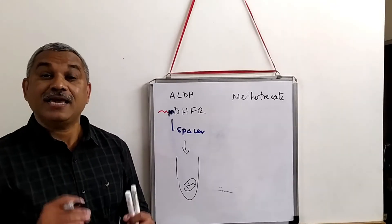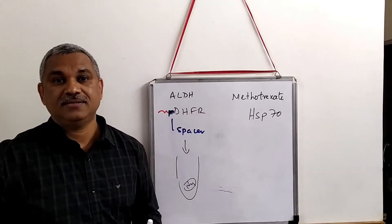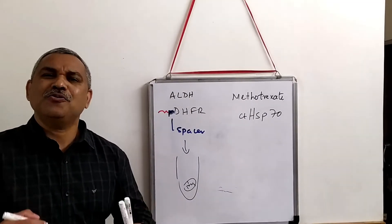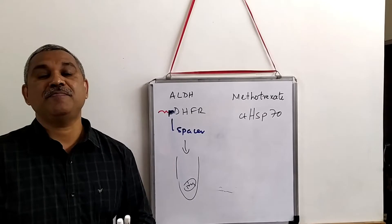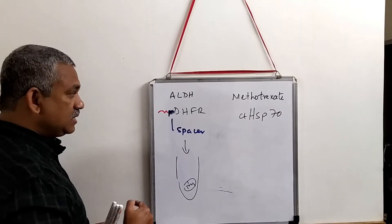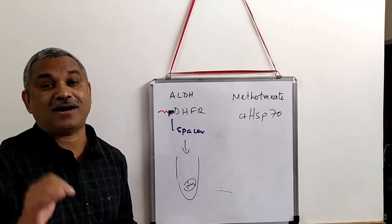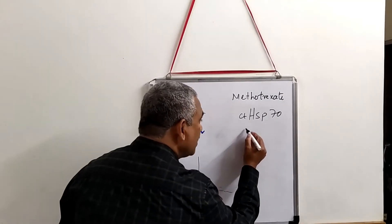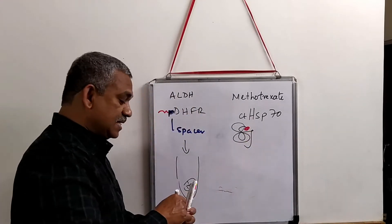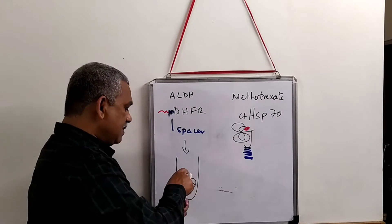Generally speaking, HSP70 — a heat shock protein — is required in the cytoplasm to maintain the enzyme in an unfolded state. What they did is use methotrexate in order to fold the dihydrofolate reductase enzyme, so the DHFR enzyme is now folded because methotrexate is added. Here is the spacer, and then it has the signal at the end.